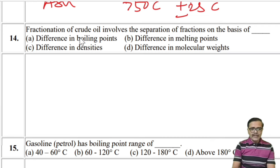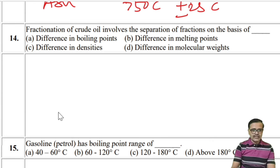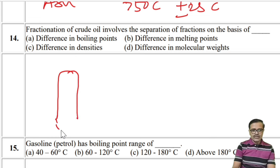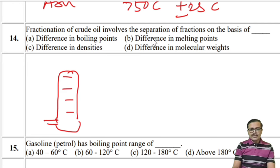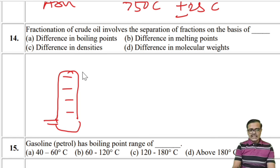Fractionation of crude oil involves separation of fractions on the basis of differences in boiling points — it is fractional distillation. Options: difference in boiling point, melting point, density, or molecular weight. The answer is A: difference in boiling point.